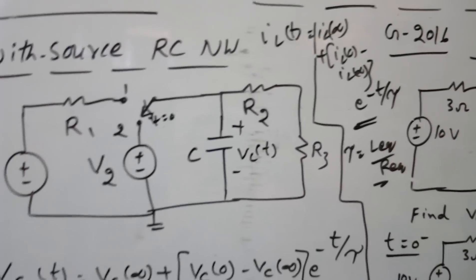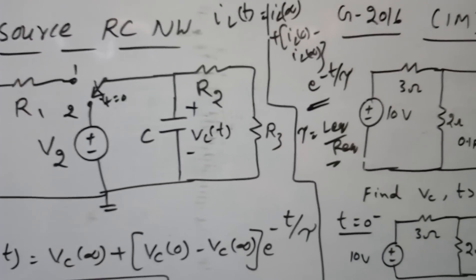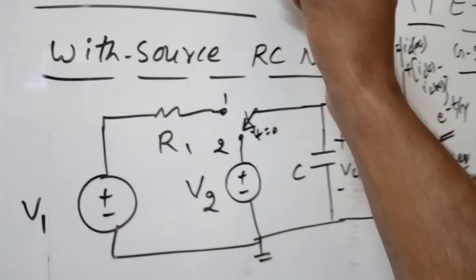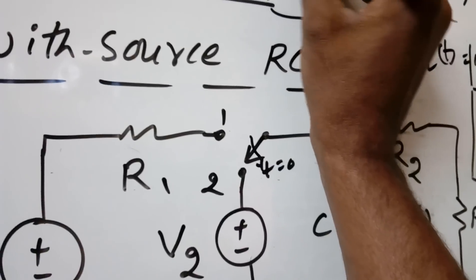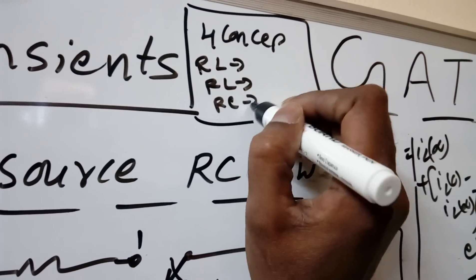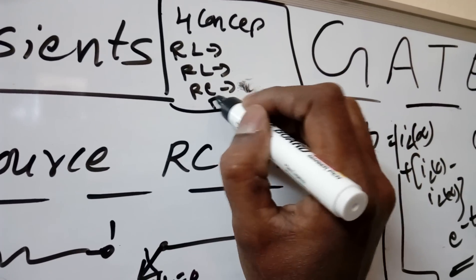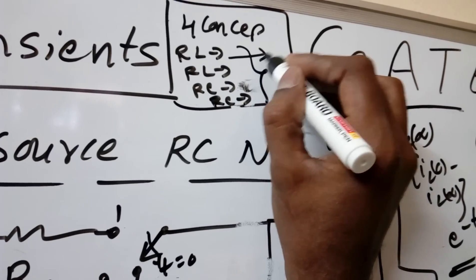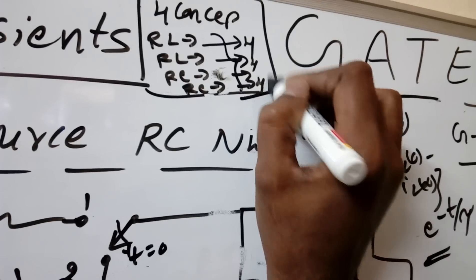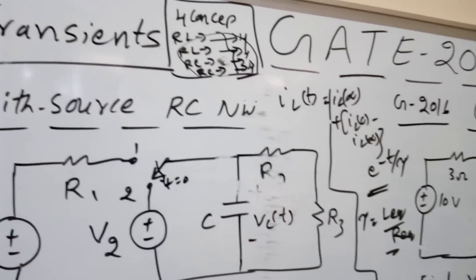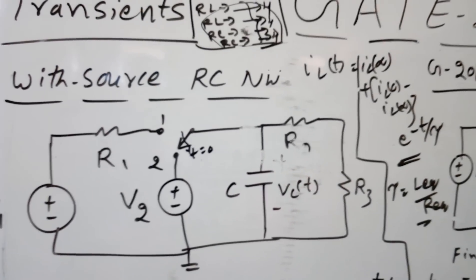In the next lecture we will solve a few more problems on these concepts, including previous GATE questions. Remember four concepts: source-free RL network, RL network with source, source-free RC network, and RC network with source. You should practice at least four problems from each concept, otherwise you may forget. I hope you will score marks from these concepts.